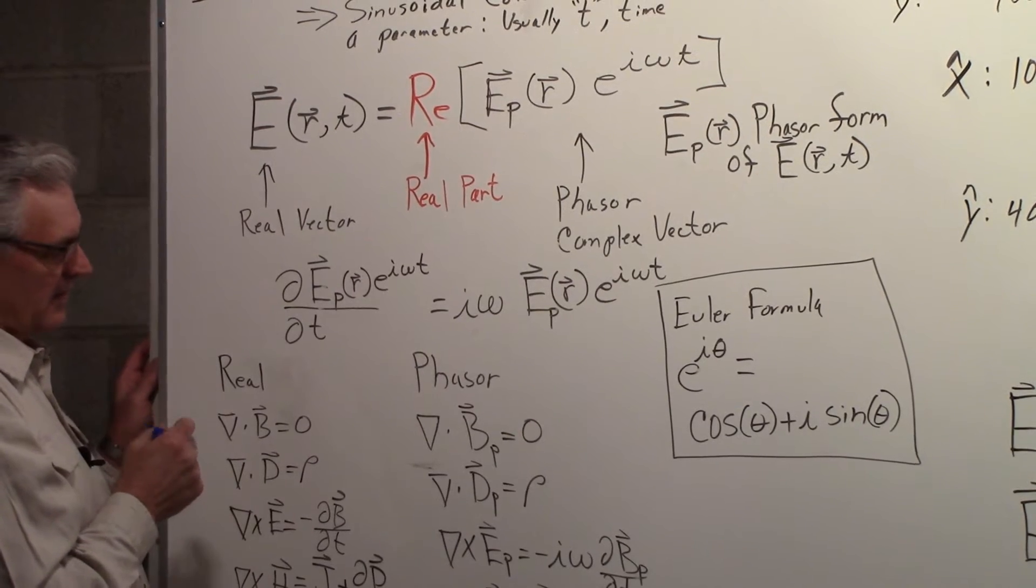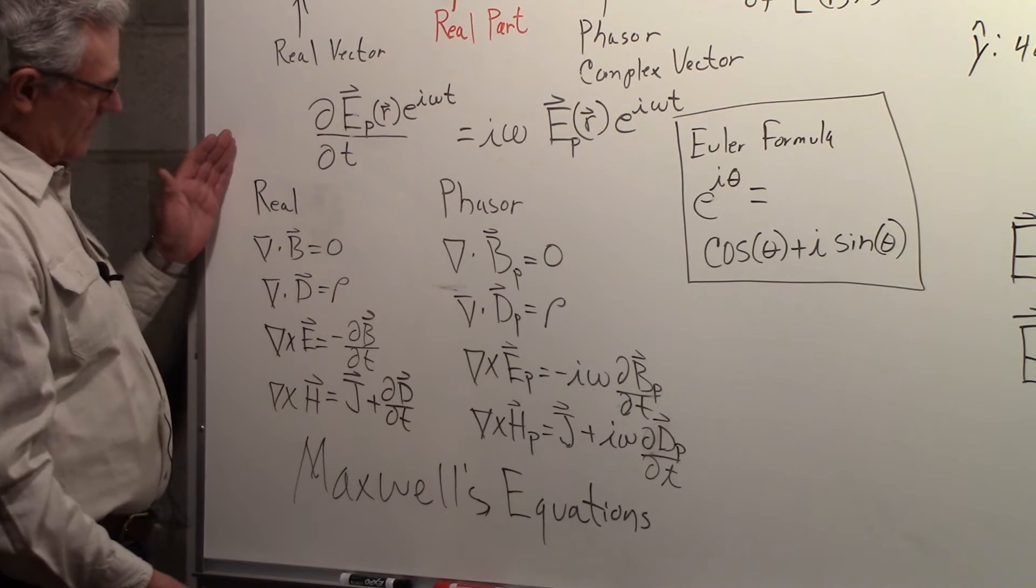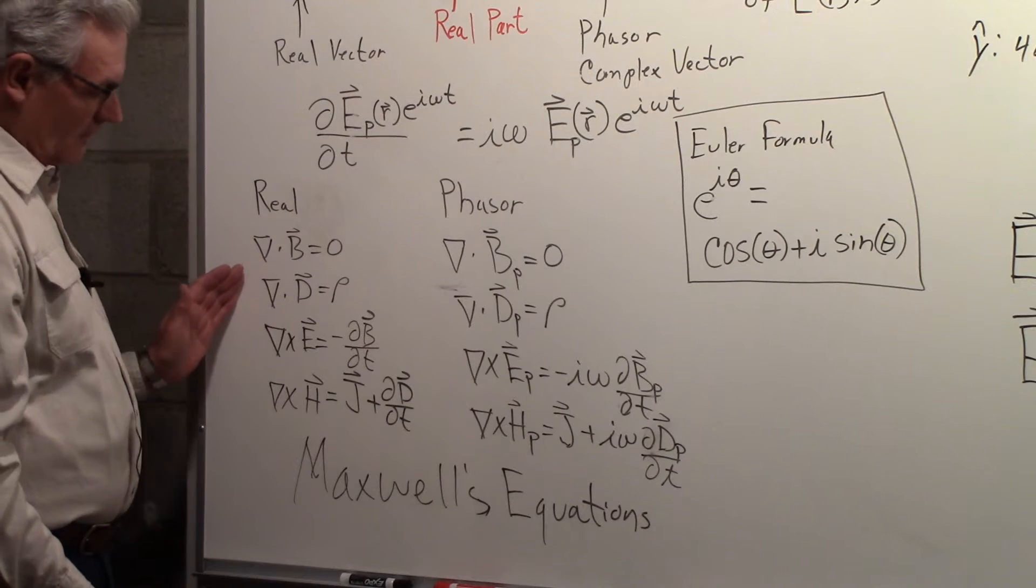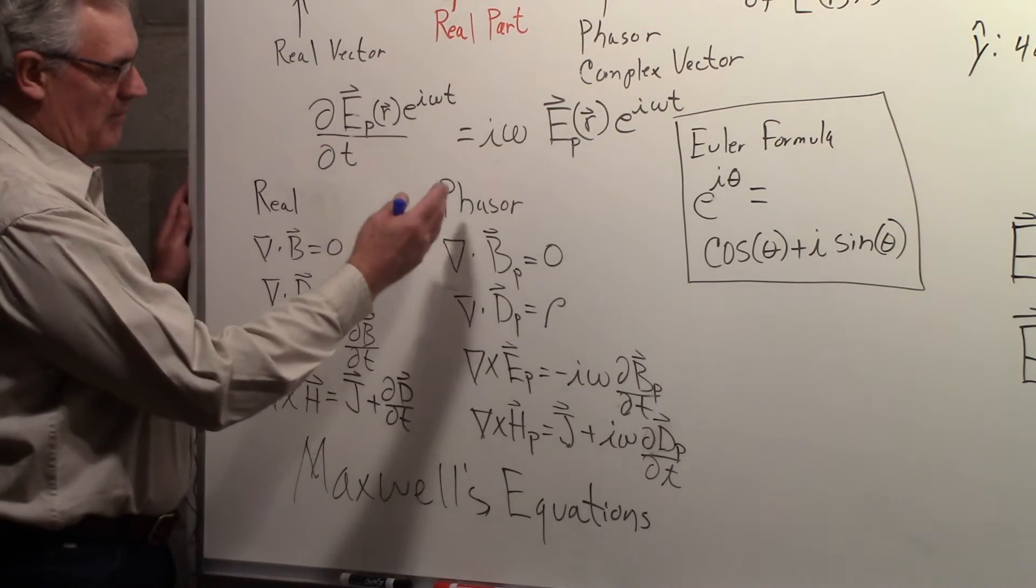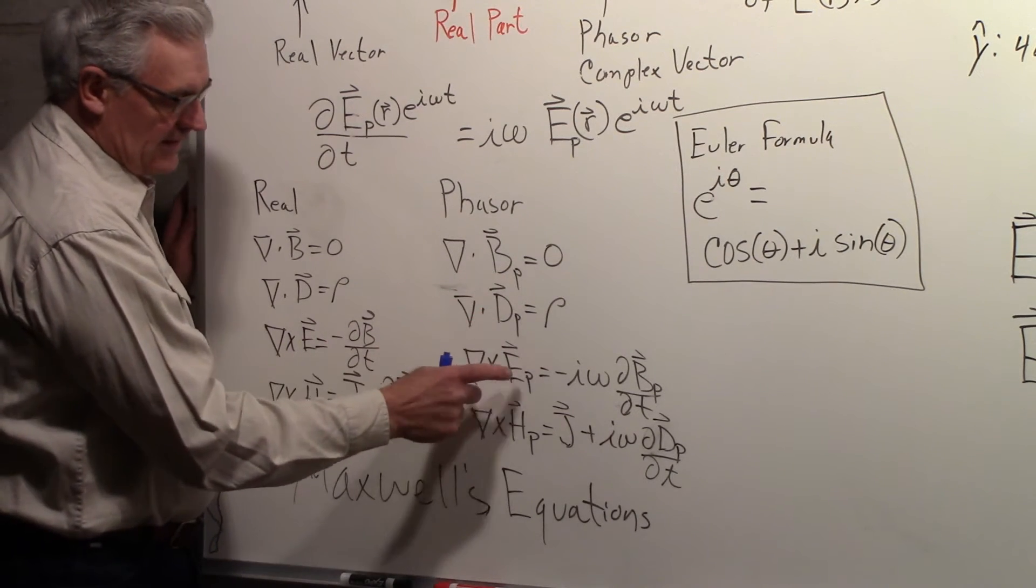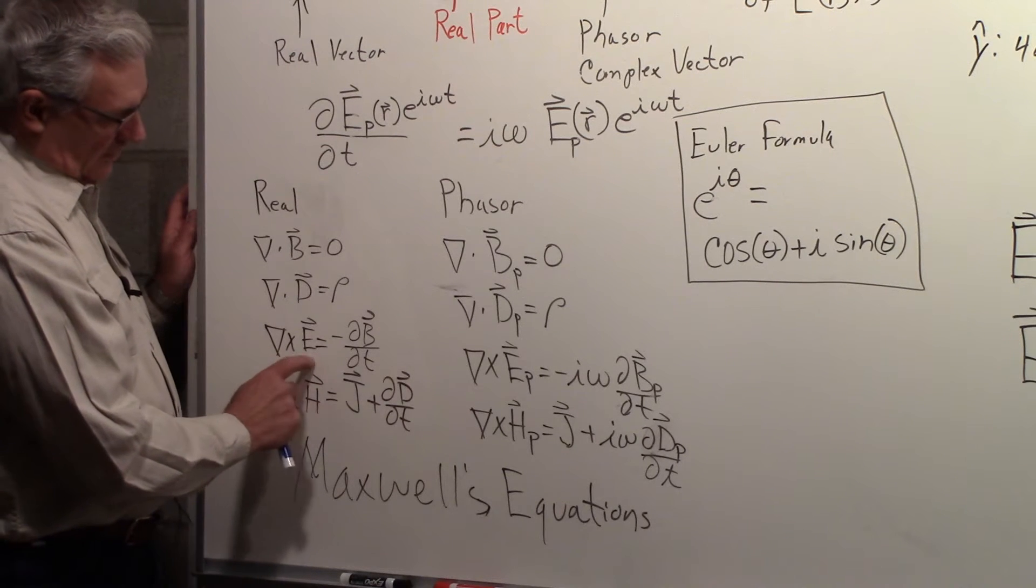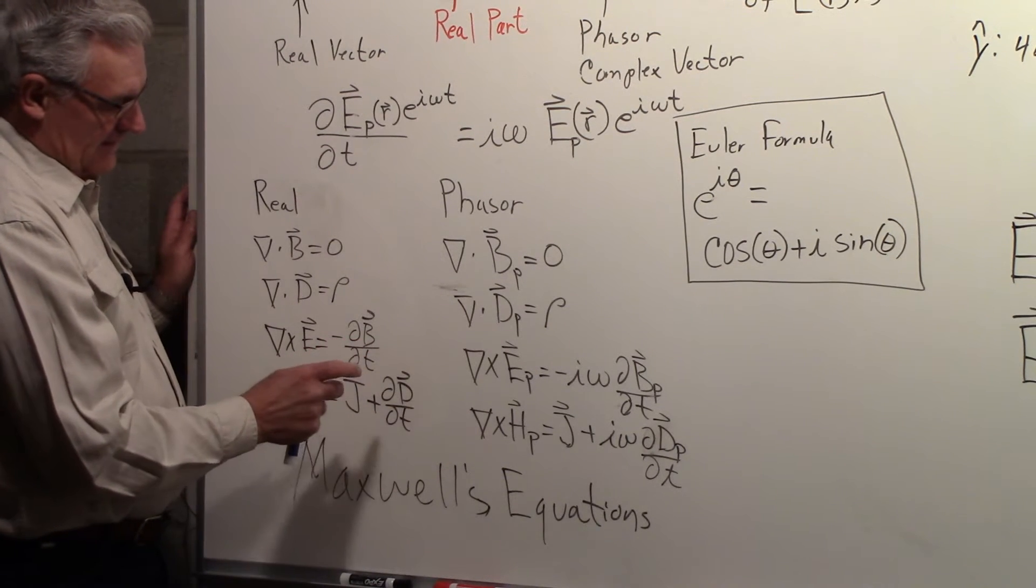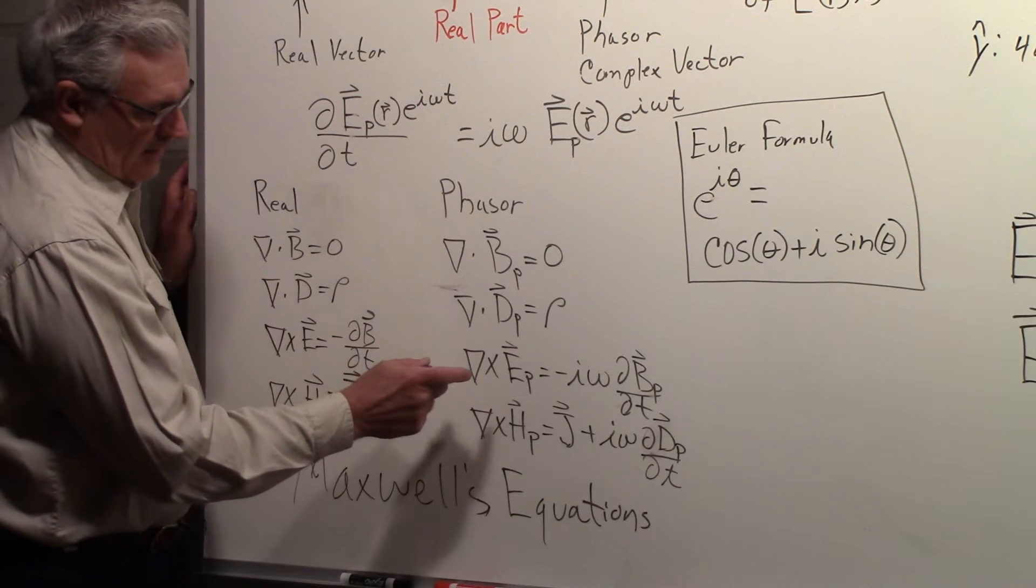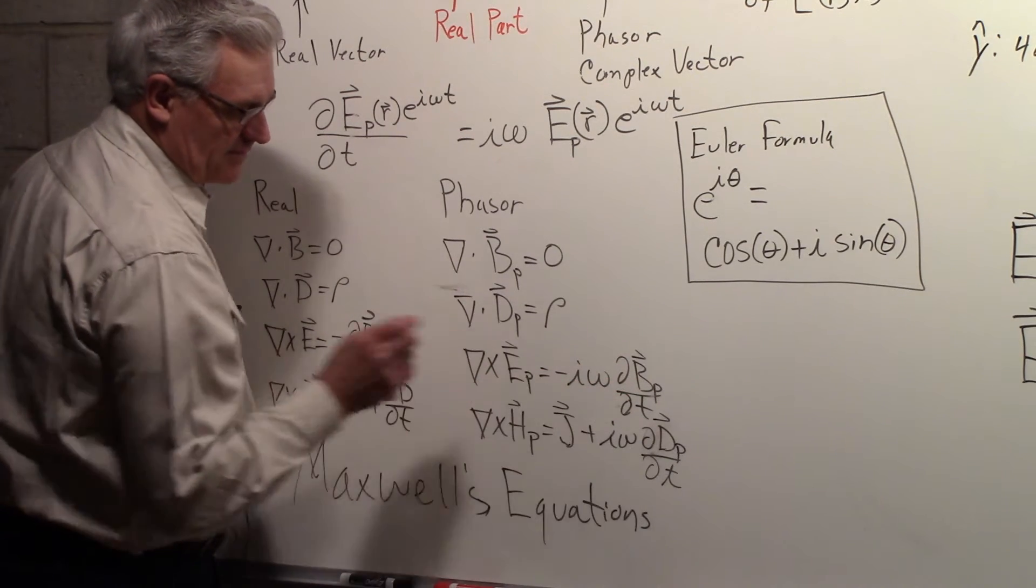And if we can take a look at real Maxwell's equations, this column represents using the real vectors, and this column represents using the phasor form, so the b, the d, and the e, and the h have a sub p on it. And when you get down to the curl b is equal to the minus partial of b with respect to t, telling us a changing magnetic field produces an electric field, we'll wind up with minus i omega partial of b p with respect to t.